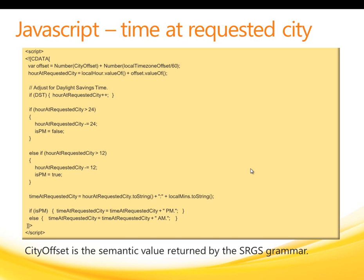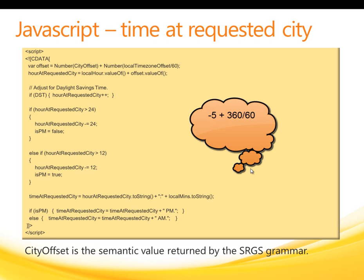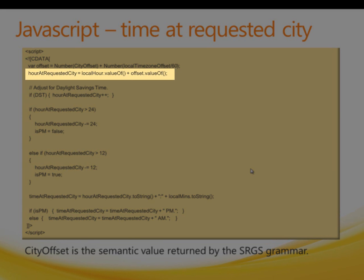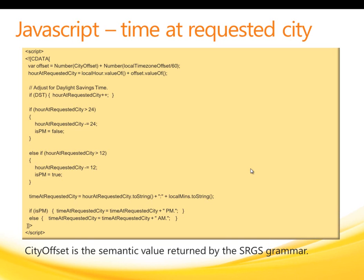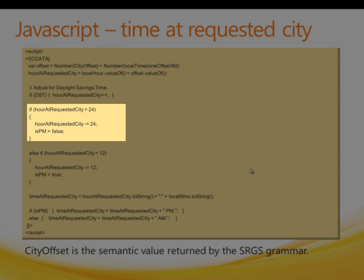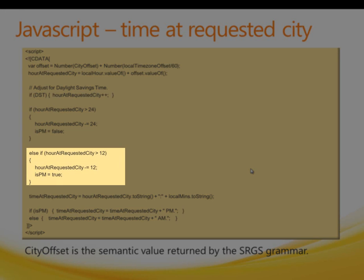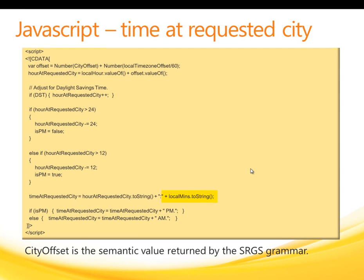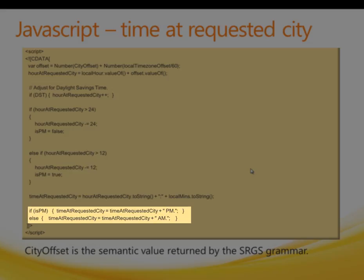For example, let's assume that the user is in Chicago, Illinois and wants to know the time in New York, New York. City offset will be set to negative 5 and local time zone offset will be 360. Negative 5 plus 360 divided by 60 equals negative 5 plus 6, which equals positive 1. So the offset relative to local time is positive 1 hour. The next line of code sets the hour portion of the time in the requested city by adding offset to the hour at the local city. Continuing with the example, if it is 10:15 a.m. in Chicago, the hour portion of the time in New York will be 11. Next, the code adjusts for daylight savings time if necessary and then reduces the hour portion as needed, subtracting 24 if the hour portion is larger than 24 and subtracting 12 if the hour portion is larger than 12. The remainder of the code tacks on the minutes portion and a suffix of a.m. or p.m. depending on whether the time is before noon or afternoon.